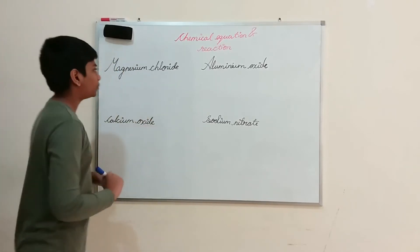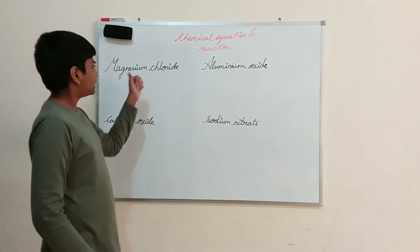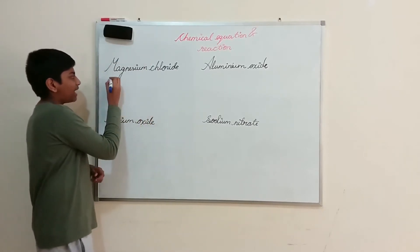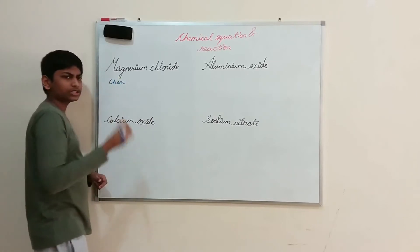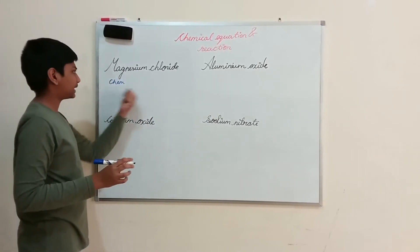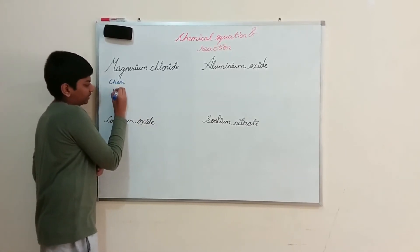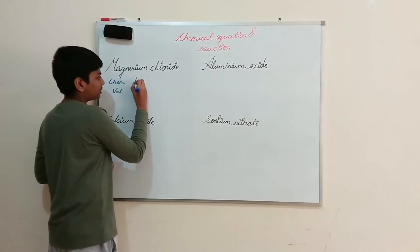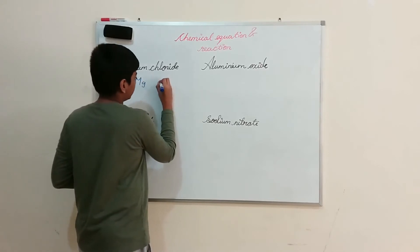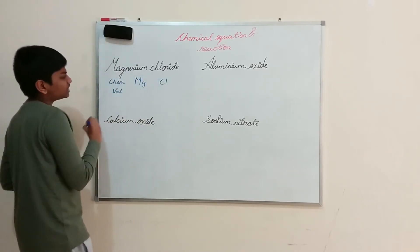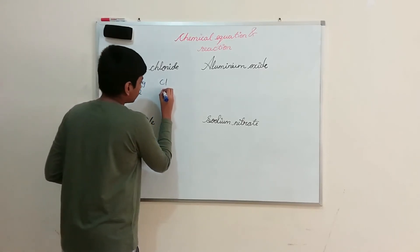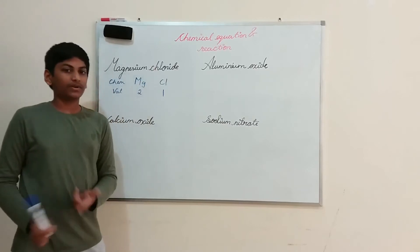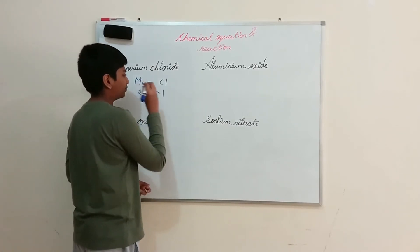For magnesium chloride, write the chemical symbols: Mg and Cl. Then write their valencies — magnesium's valency is 2 and chlorine's valency is 1. Now use the cross multiplication method. We multiply Mg by 1 and Cl by 2. In maths we write this as 1x and 2y, but in chemistry the subscripts go at the bottom of the element symbols. So we write Mg with subscript 1 and Cl with subscript 2.